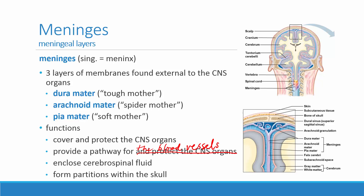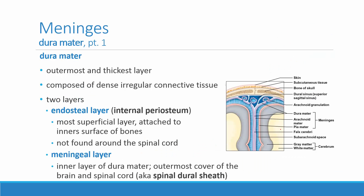Last of all, the meninges form partitions within the skull. You can see in this picture the dura mater folded down in between the right and left cerebral hemispheres, helping to separate them and hold them in place. They act a little like seat belts, strapping in each of the different zones of the brain and connecting it back to the skull itself.